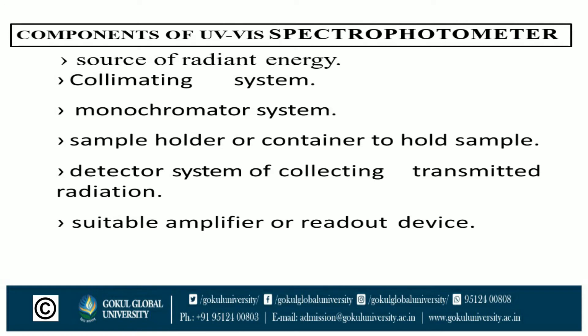Here is the list of components of the UV-visible spectrophotometer: the source of radiant energy, collimating system, monochromator system, sample holder or container to hold the sample, detector system for collecting transmitted radiation, and a suitable amplifier or readout device.